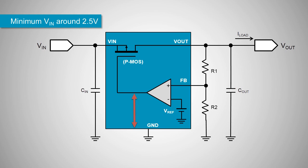To ensure sufficient MOSFET gate drive voltage, LDOs with p-MOSFET pass elements normally have a minimum input voltage requirement of around 2.5 volts.